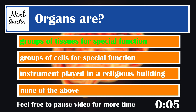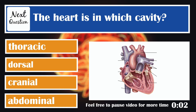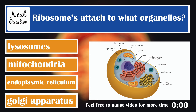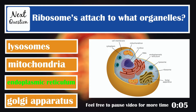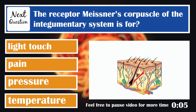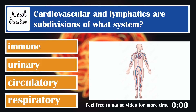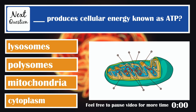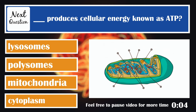The heart is in which cavity? The thoracic cavity. Which is superior to the torso? The head is superior to the torso. Ribosomes attach to the endoplasmic reticulum, which makes it rough ER. On smooth ER, the ribosomes do not attach. The receptor of Meissner's corpuscle of the integumentary system is for light touch. Cardiovascular and lymphatics are subdivisions of the circulatory system. Mitochondria produce cellular energy known as ATP.